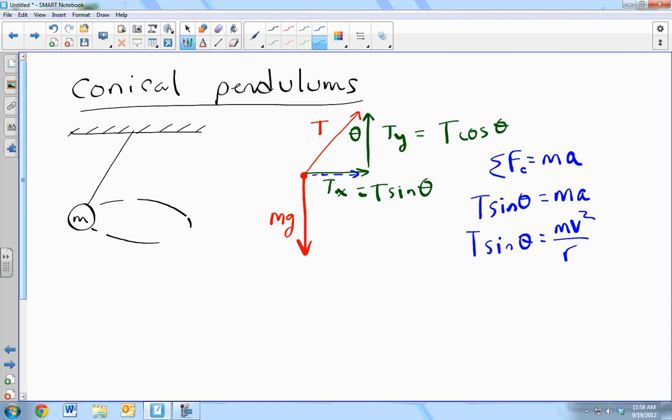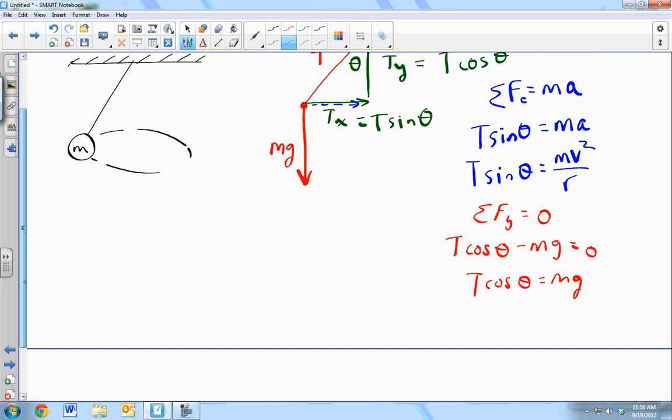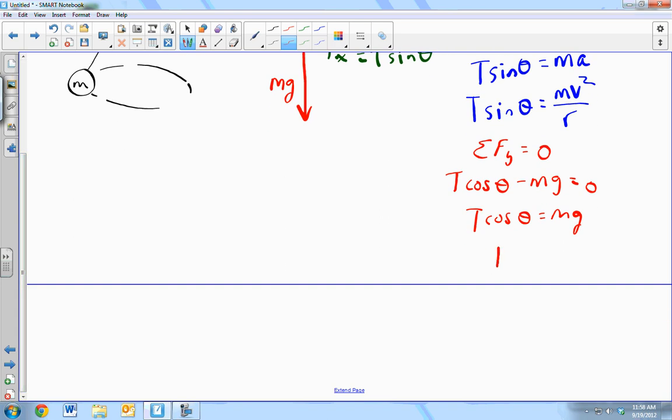How would you solve for the t? You look in the other direction. In the y direction, you've got sum of the forces equals zero. No acceleration in the y. So you have t cosine theta up minus mg equals to zero. So t cosine theta equals mg. T equals mg over cosine theta.